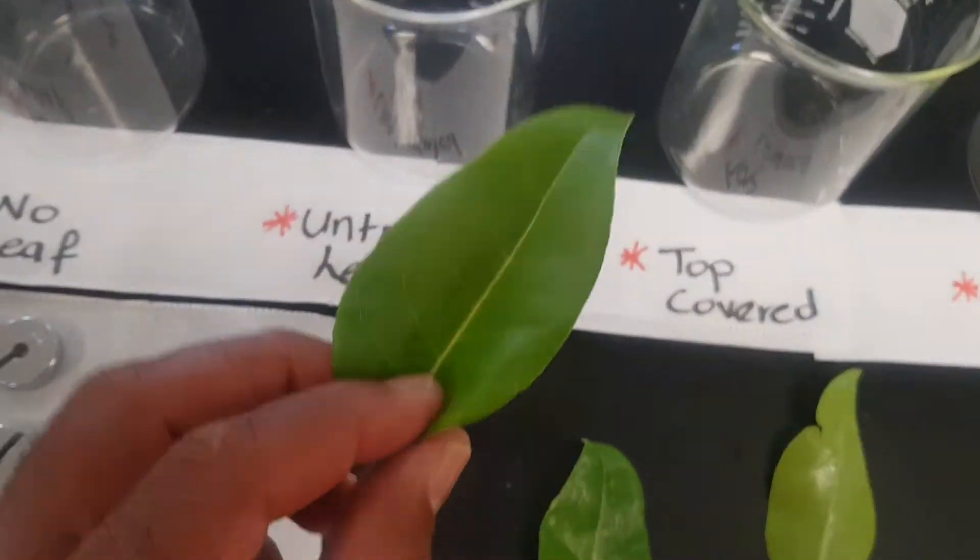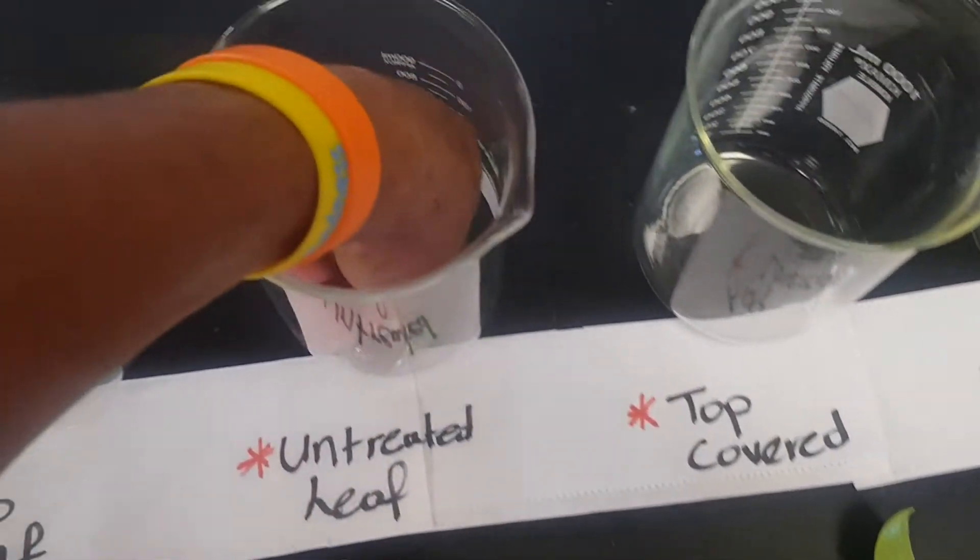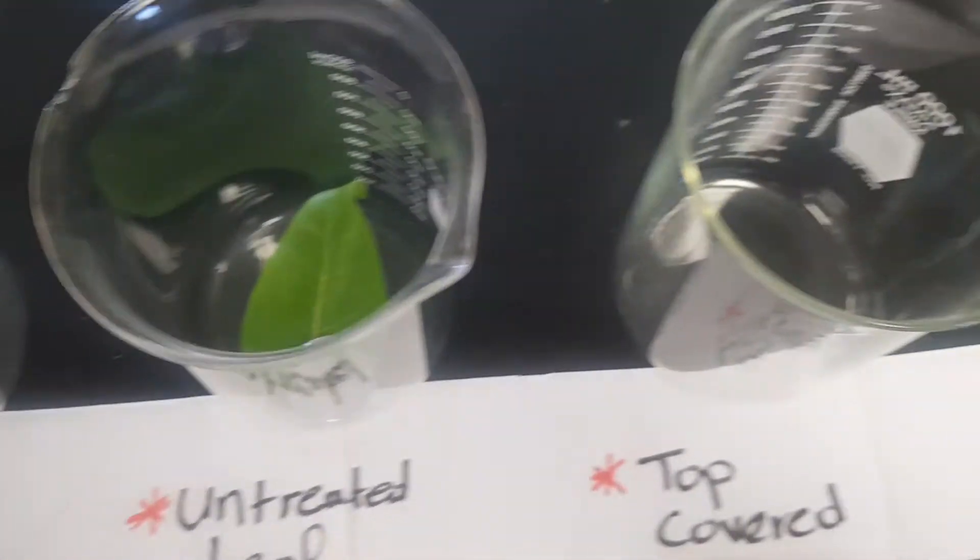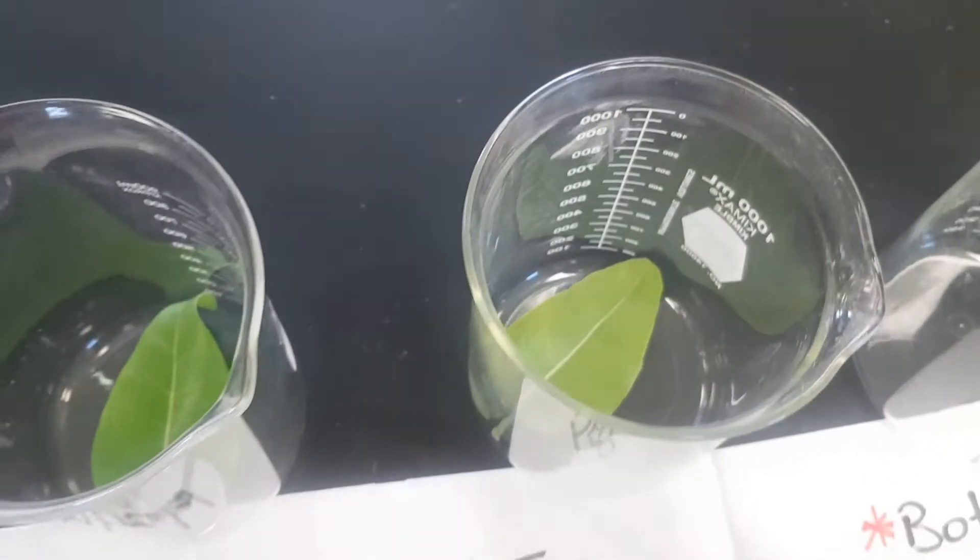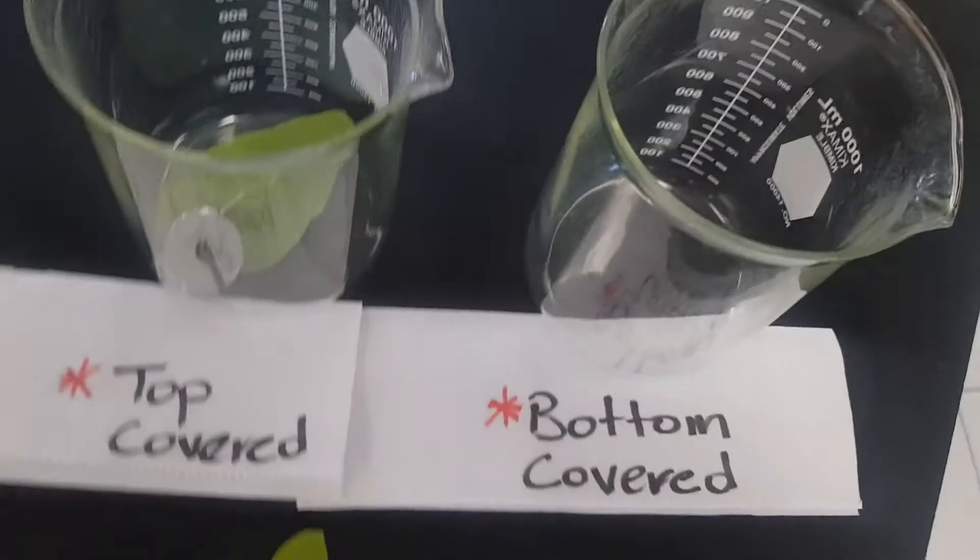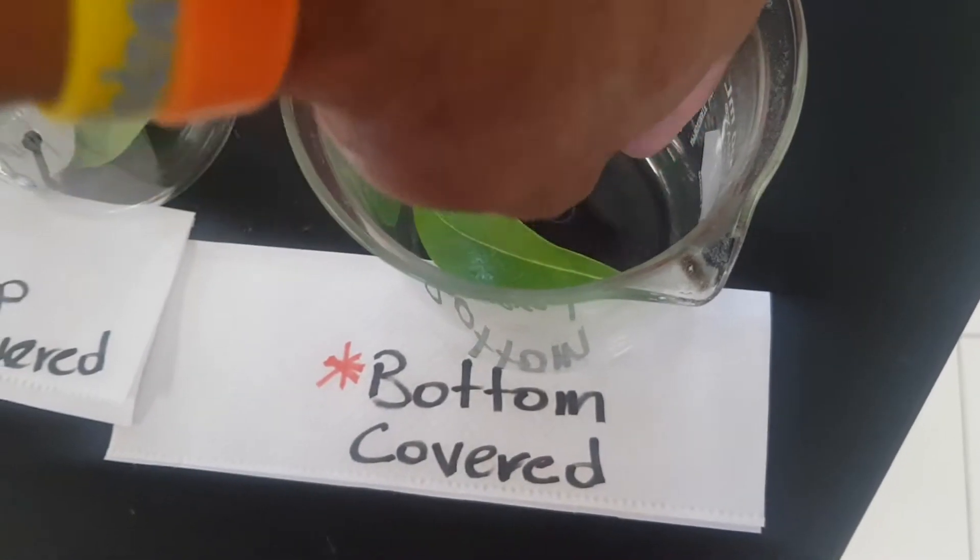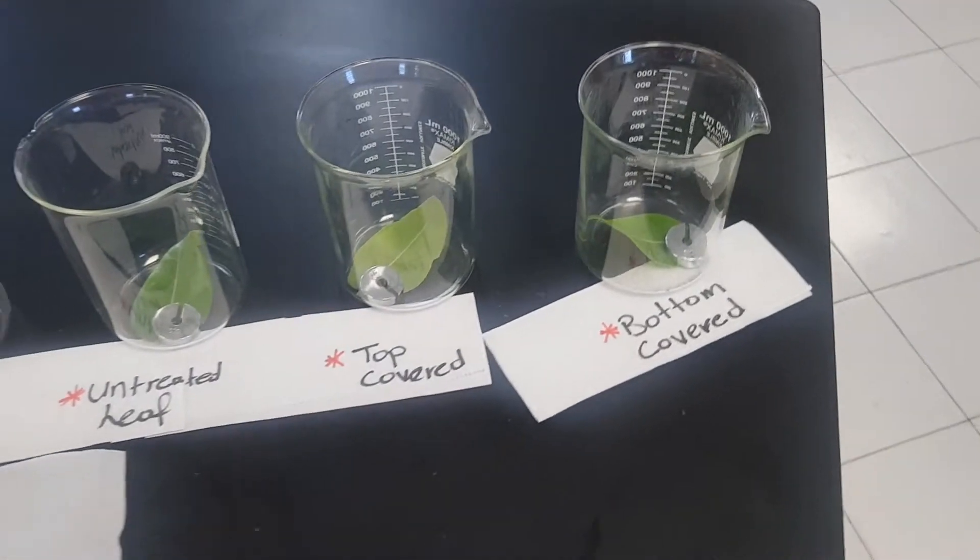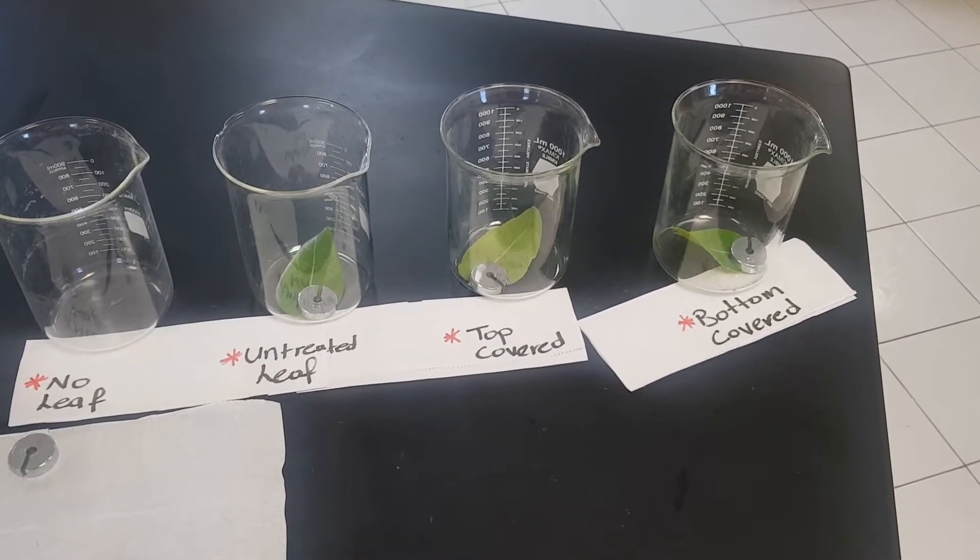To prevent any floating of the leaves, we're going to put the leaves in the beaker and then secure it with a weight. Let's put this on the bottom. Let's secure this with a weight as well. Now the leaves are being secured with weights to the bottom of the beaker to prevent floating.